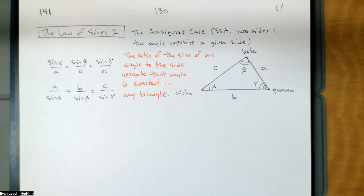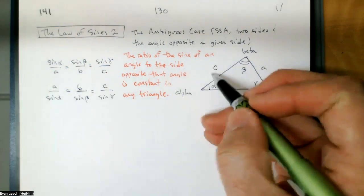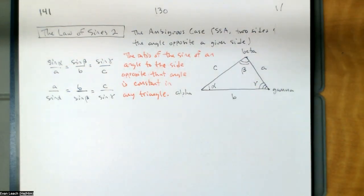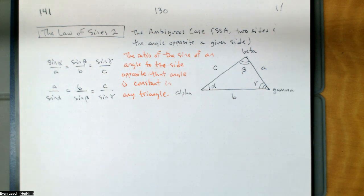Two sides and the angle opposite one of those sides. For example, if I gave you alpha, A, and C. There's one fraction that we can make: A and alpha, B and beta, C and gamma. If I have one complete fraction of the law of sines and only one angle, then we're in the ambiguous case of the law of sines.